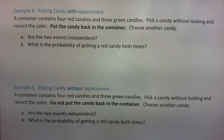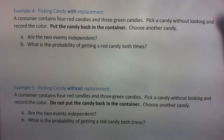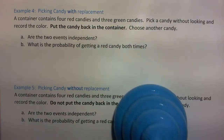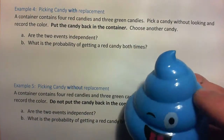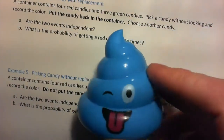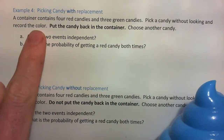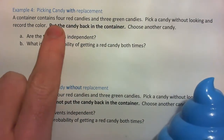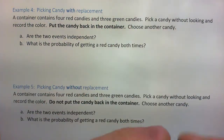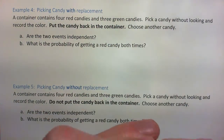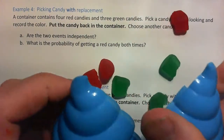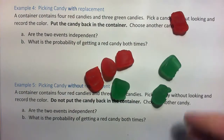In this video we're going to do example 4 and 5 — picking candy with replacement and picking candy without replacement. We're going to use this container here; it's a funny shape. This container contains 4 red candies and 3 green candies. Here's 4 red, here's 3 green.